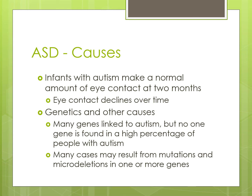There are two slides discussing the causes of autism spectrum disorder, and I'll say now that it's complicated — there's no easy answer, and the suggestions and hypotheses are many. To start: infants with autism make a normal amount of eye contact, but at two months old we see that eye contact decline over time.